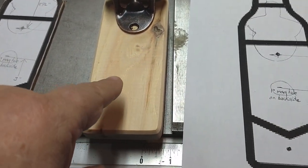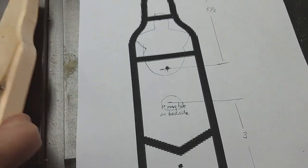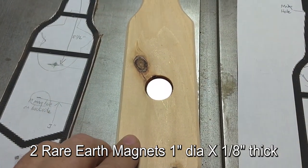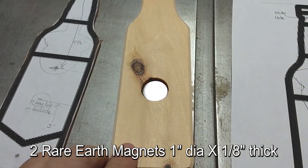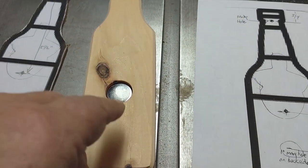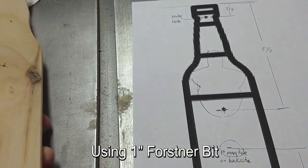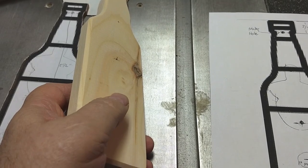Then on the backside, I've got some rare earth magnets - one inch by one-eighth inch thick rare earth magnets - and I drilled them down to a depth very close to getting through to the edge but not quite blowing through it.